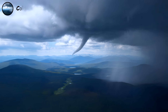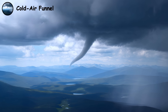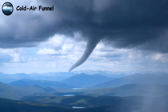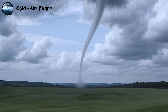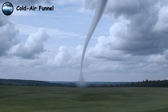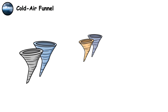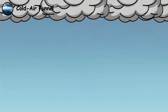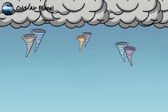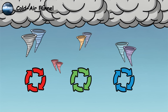Cold air funnels, as the name suggests, form in cold, unstable air masses behind cold fronts. These weak tornadoes rarely touch the ground. What makes them notable is their frequency and benign nature — they can appear in groups, with multiple funnels visible simultaneously across a region. Most never reach the surface, remaining as harmless tubes of rotating air dangling from clouds.